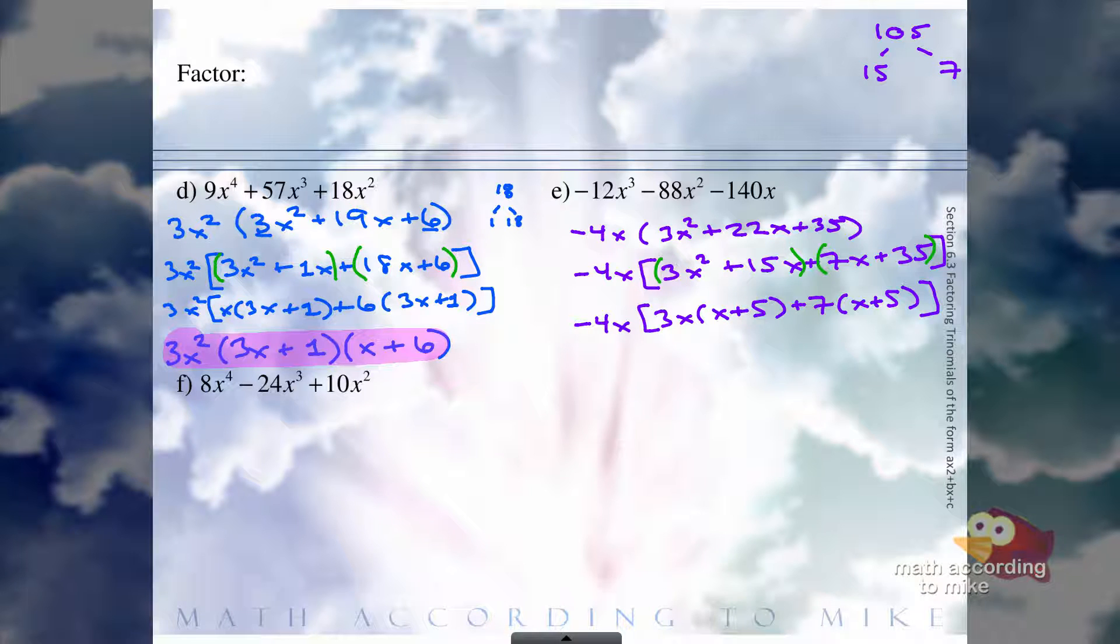Great. So now both groups have an X plus 5. Don't forget to carry down your negative 4X. If we pull that out, we'll have X plus 5 times 3X plus 7. So that is the final factorization of negative 12X cubed minus 88X squared minus 140X.